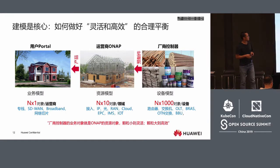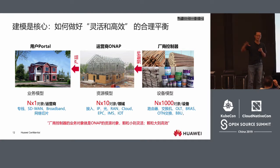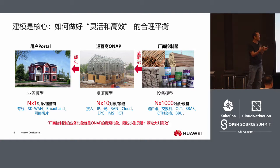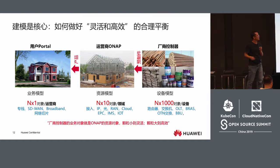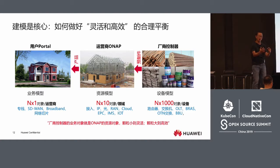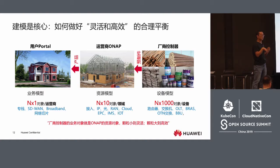After you have the automated platform, the key is to build a model. From the perspective of operators, although you have ONAP as this automatic platform, you also need to think about how to build the model. Sometimes the devices are quite complicated. After you have the initial model, you build the windows and make the doors step by step, but you still need to build your own model.